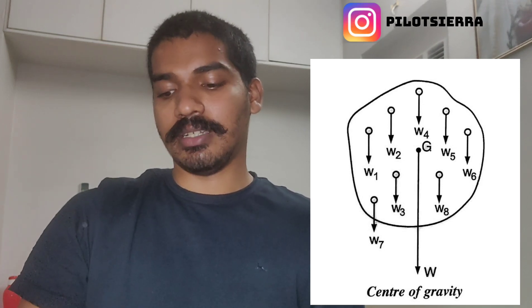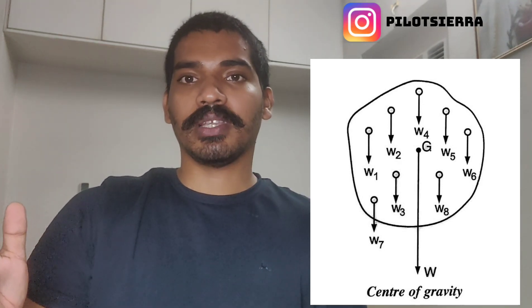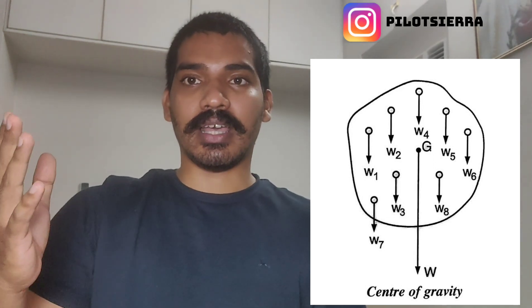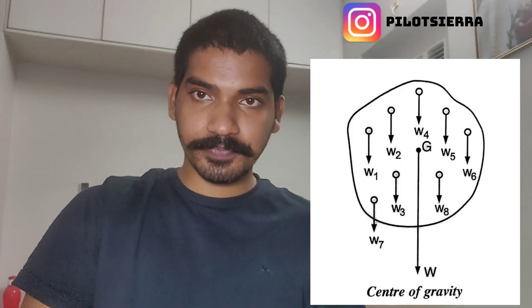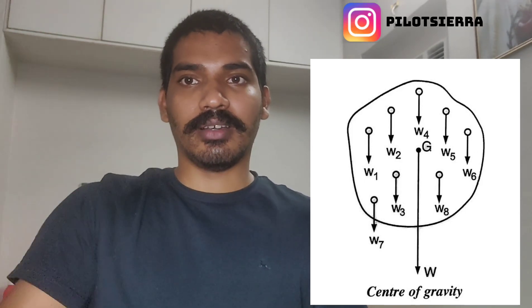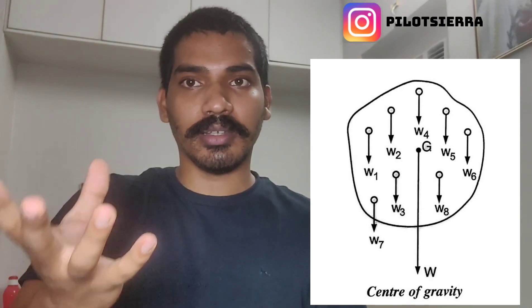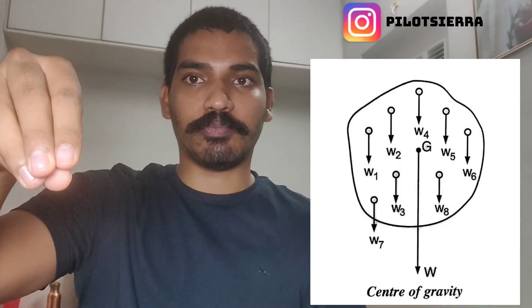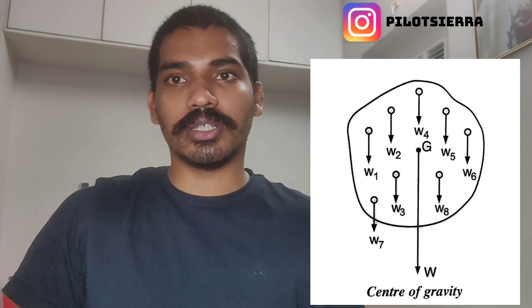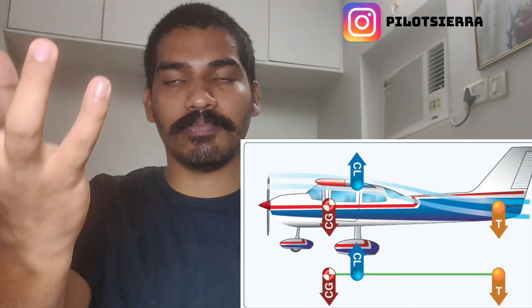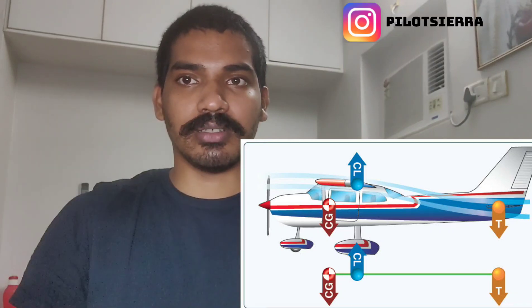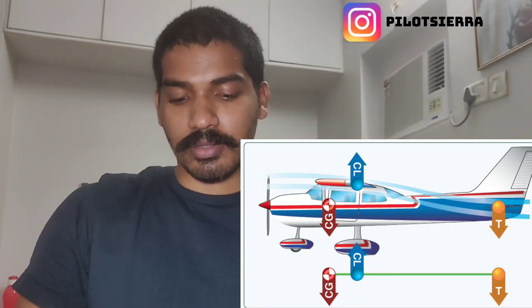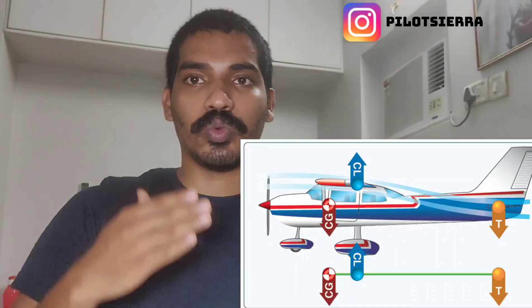Starting with the center of gravity — the center of gravity of a body is the point at which the entire weight of the aircraft is assumed to act, or is concentrated at. It's a theoretical thing; all the weight of the aircraft is assumed to be acting at that particular point, directed down towards the center of the earth where gravity is pulling the aircraft.